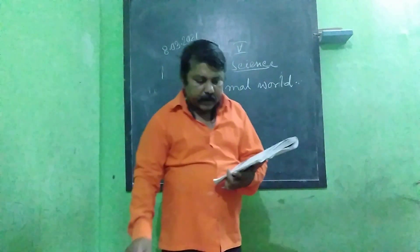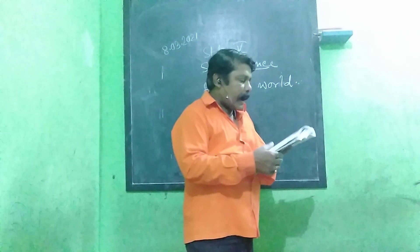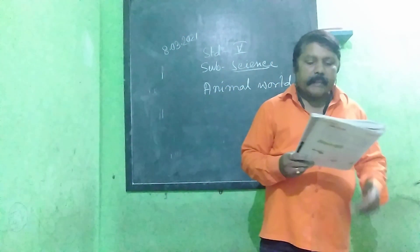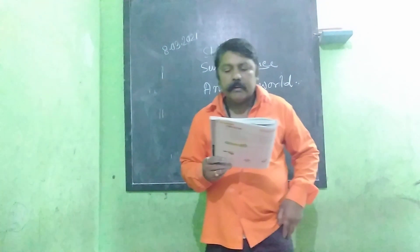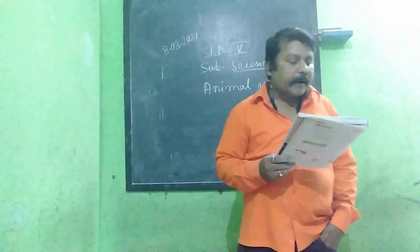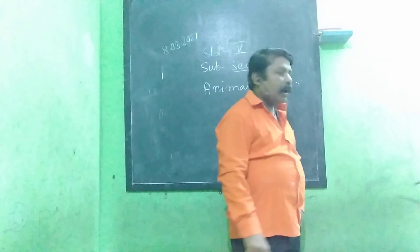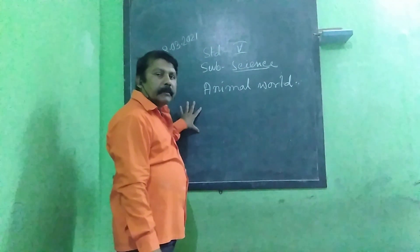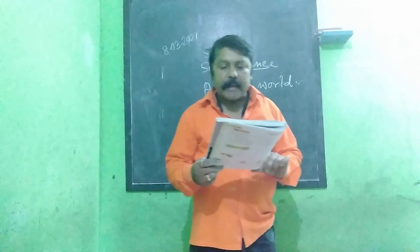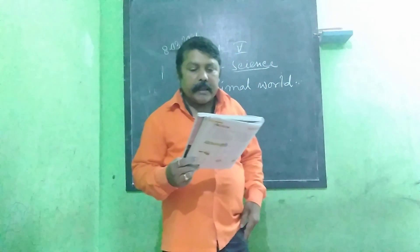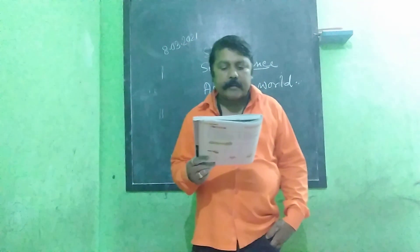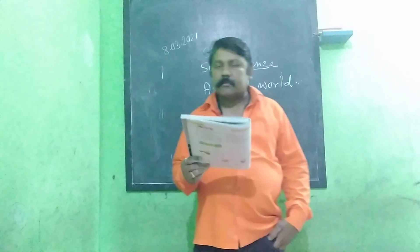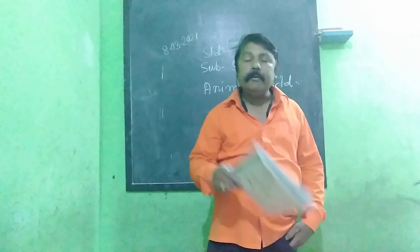We read this chapter: animals are different. They also live in different places and eat different kinds of food. Animals are different; they live in different places, eat different kinds of food, and move about in different ways.